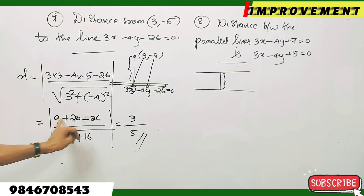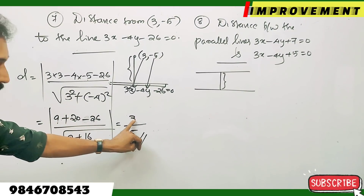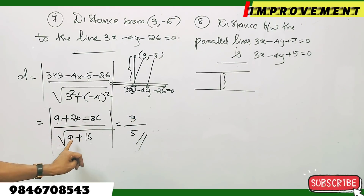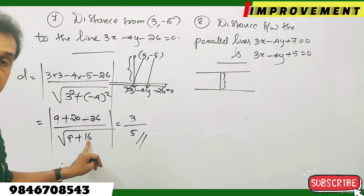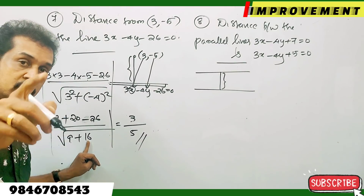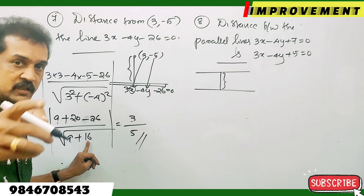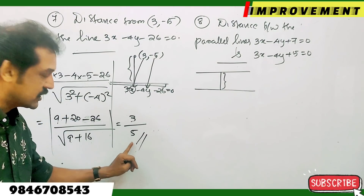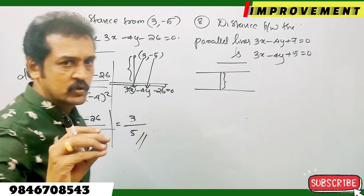29 minus 26 is 3, and 9 plus 16 is 25 whose square root is 5. So the answer is 3 by 5.